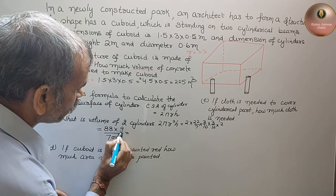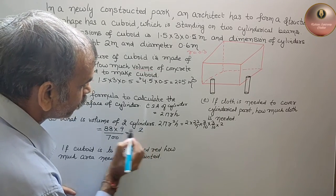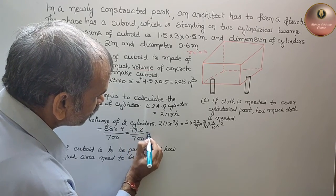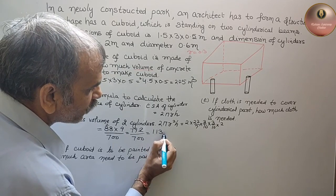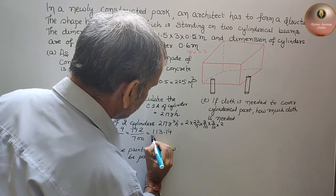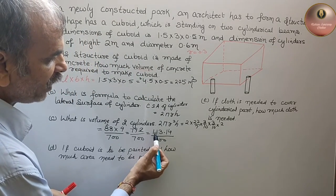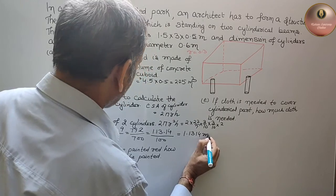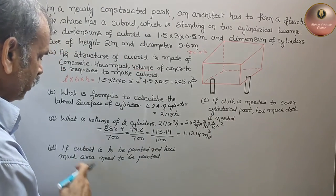Multiplying: 9 × 8 is 72, plus 7 gives 792 divided by 700. Now dividing 792 by 7: 7 goes into 79 eleven times — working through the long division we get approximately 1.1314 meter cube. So the volume of the two cylinders is approximately 1.1314 meter cube.